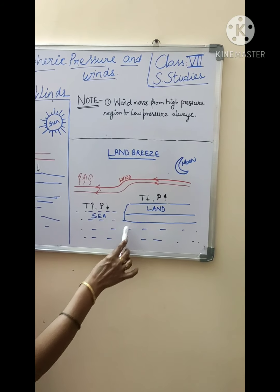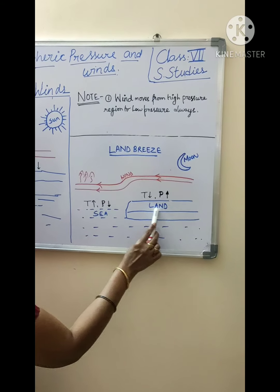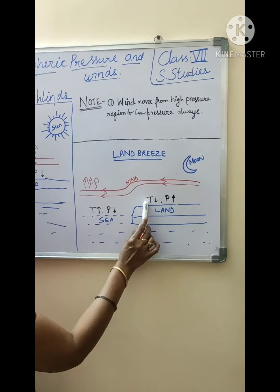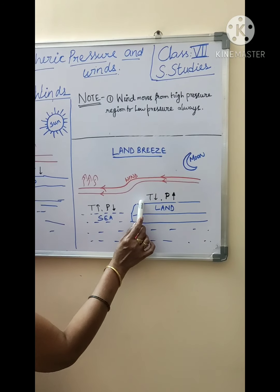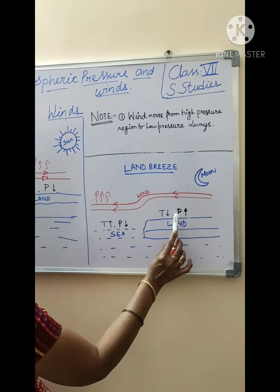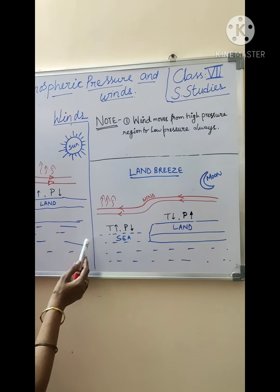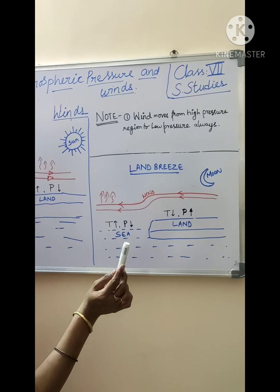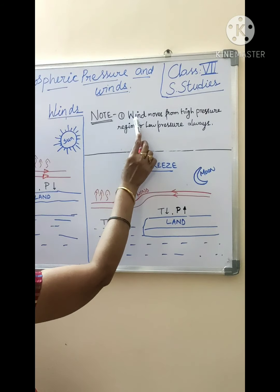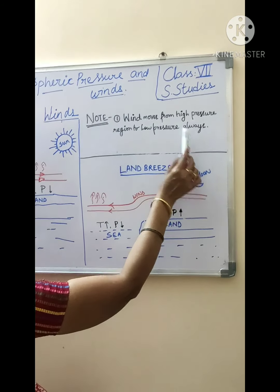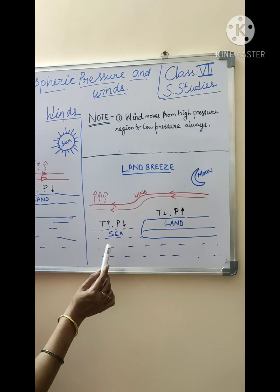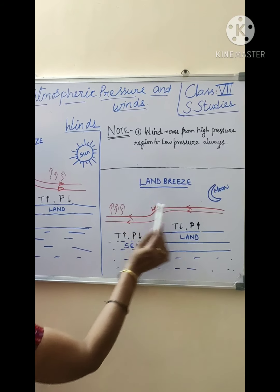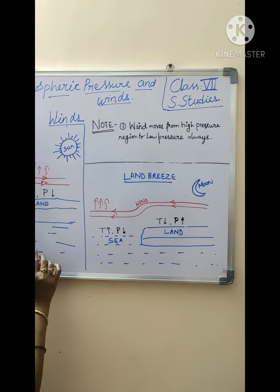Students, repeat with me. During night time, land gets cool fast. Because the land becomes cold, the temperature is less. Where the temperature is less, pressure is high. Now we come to the sea side — here the temperature is high and pressure is low. Wind moves from high pressure region to low pressure region, so the high pressure is on land and the wind moves from land to sea.